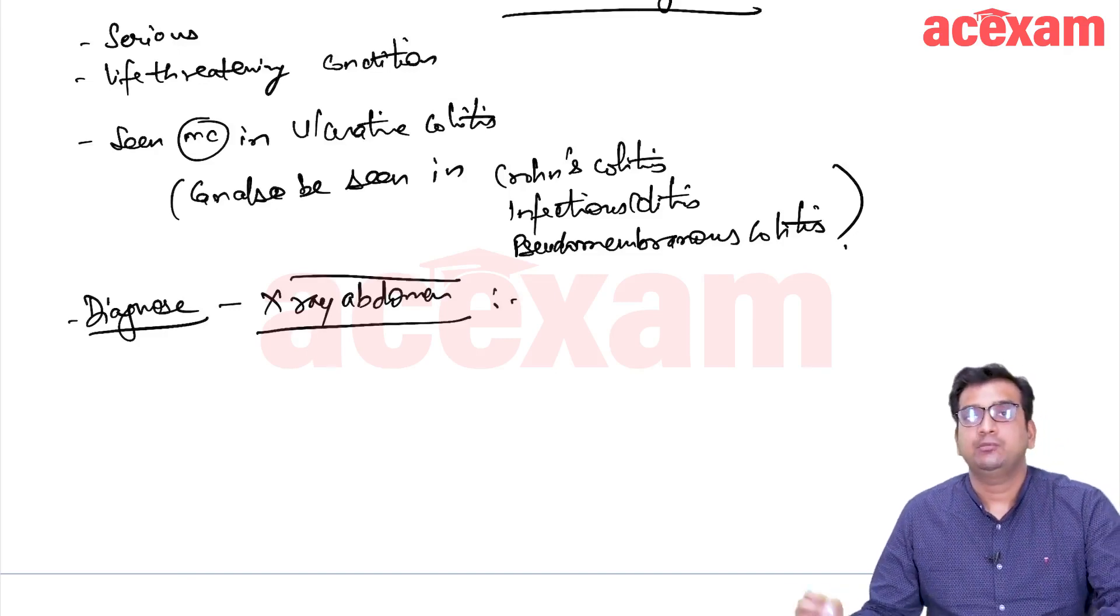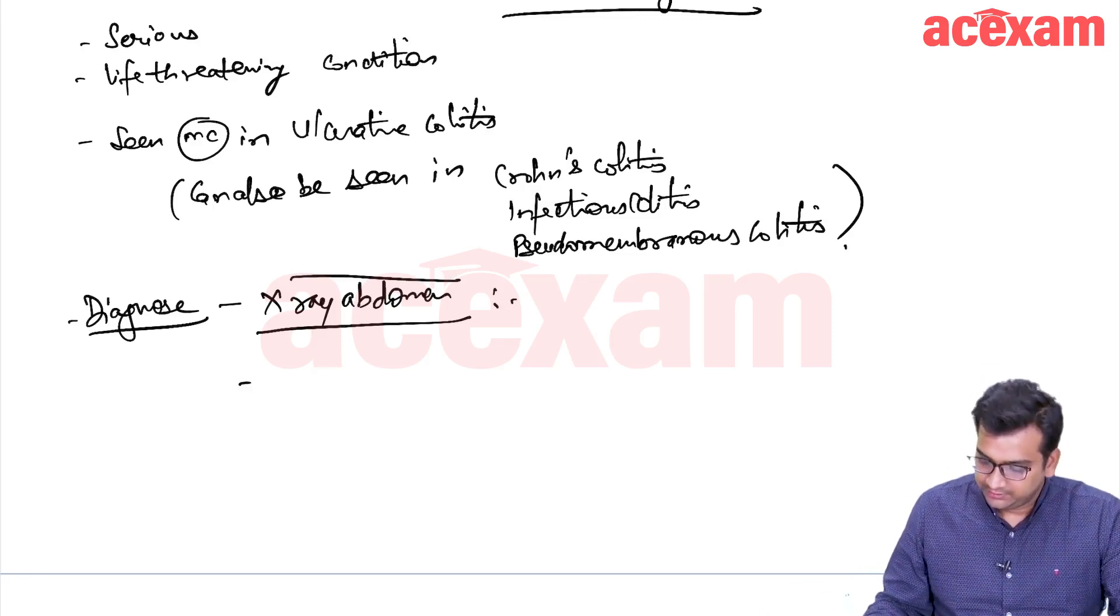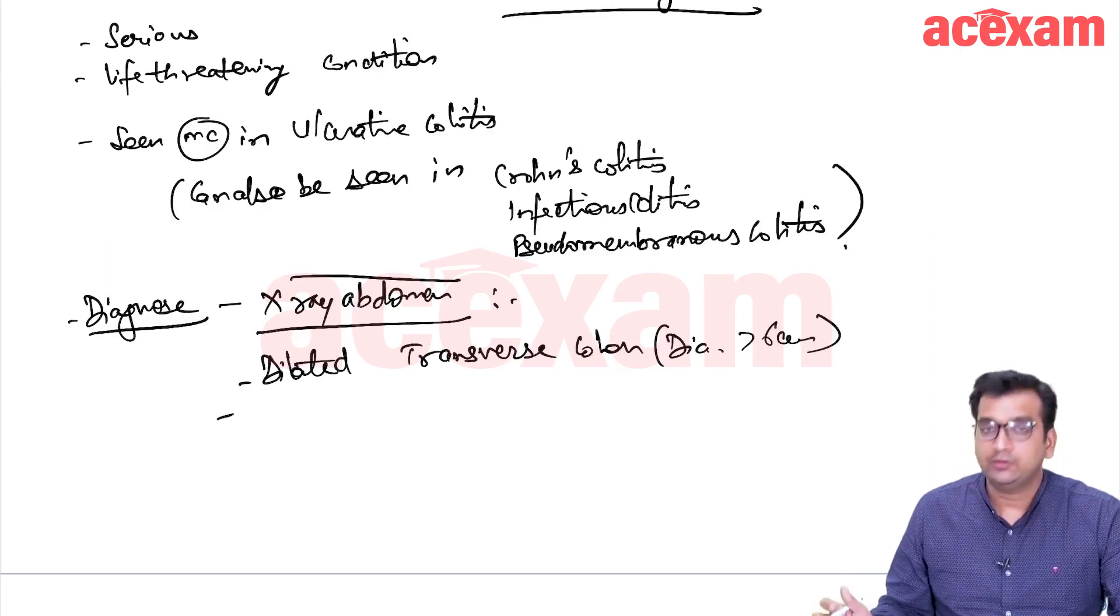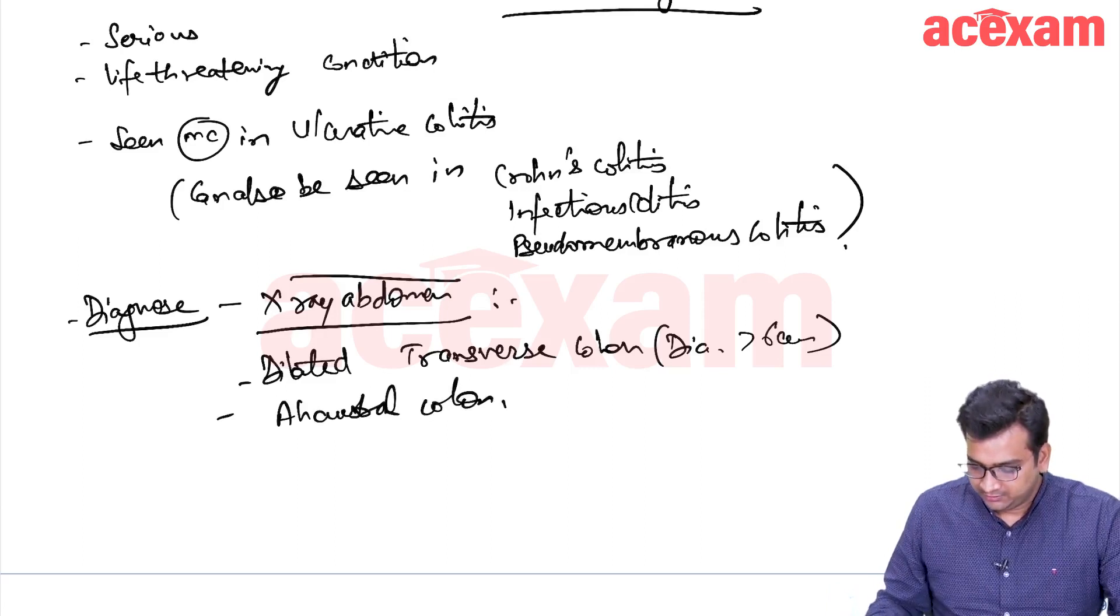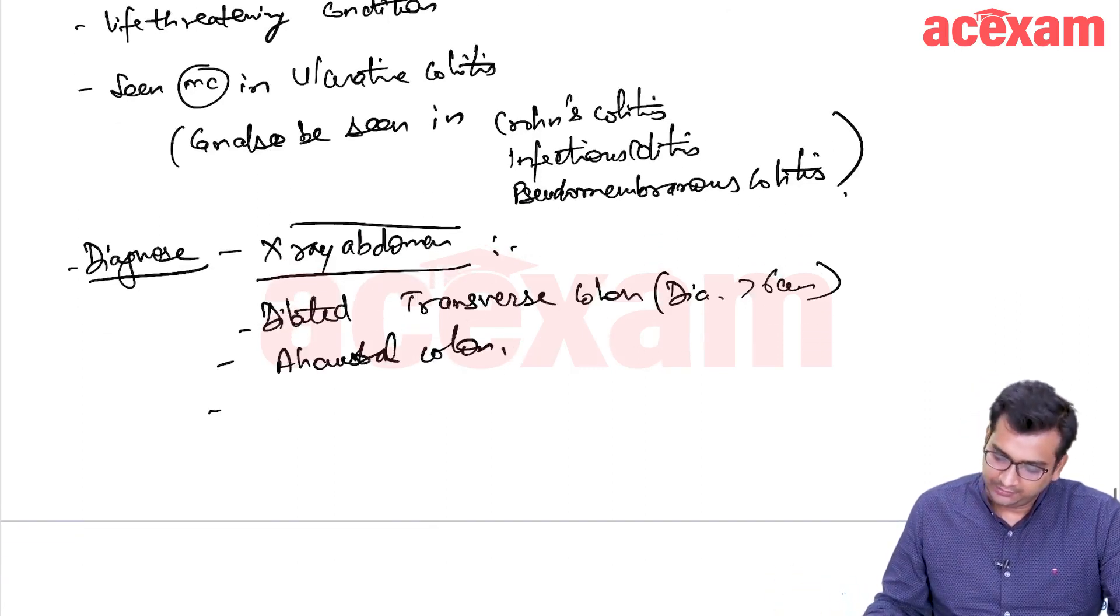What we are going to see in the x-ray abdomen, the picture I have already shown you, we are going to see a dilated transverse colon with a diameter more than 6 cm. Along with that, we are also going to see a hostile colon or a lead pipe colon or a pipe stem colon. Along with that, we are going to see multiple air fluid levels.